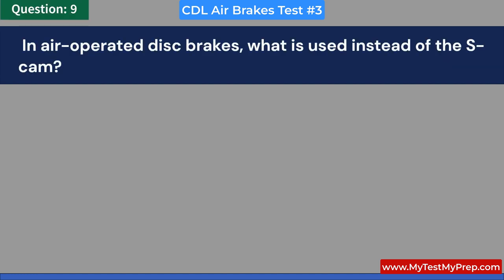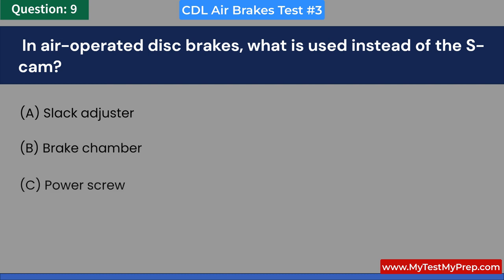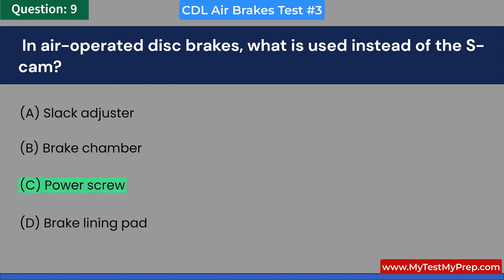In air-operated disc brakes, what is used instead of the S-cam? A. Slack adjuster. B. Brake chamber. C. Power screw. D. Brake lining pad. Answer: C. Power screw.